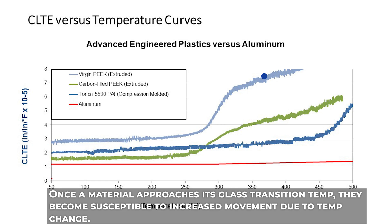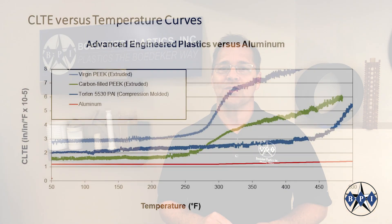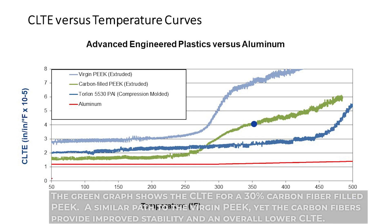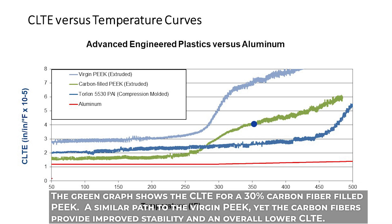This is typical of most polymers. Once a material approaches its glass transition temperature, it becomes susceptible to increased movement due to temperature change. The green graph shows the CLTE for a 30% carbon fiber-filled PEEK. This graph follows a similar path to the virgin PEEK, yet the carbon fibers provide improved stability and an overall lower CLTE.